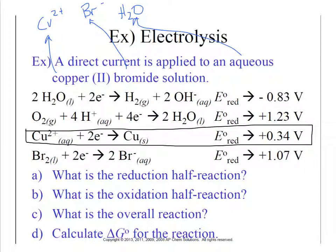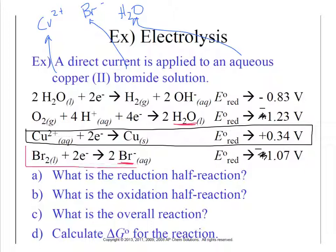For our oxidation half-reaction, we flip the equations to see the oxidation occurring. Looking at the product side: water losing four electrons is one option, and Br⁻ losing two electrons is the other. If we flip those, the values become negative 1.23 and negative 1.07. The more positive of those two is the Br⁻ reaction at negative 1.07, so that is our oxidation half-reaction.